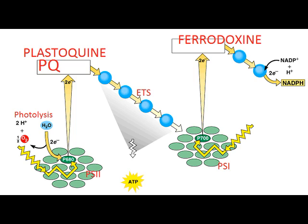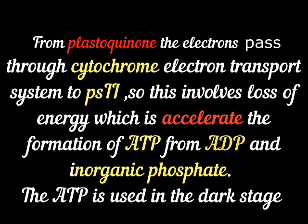The energy being lost by the electrons is used to accelerate the combination of ADP and inorganic phosphate to form ATP. So the ATP is arising from inorganic phosphate and ADP, with the energy released by the electrons acting as the catalyst. Those electrons then replace the electrons that were excited from Photosystem 1. Remember, light is striking both photosystems — Photosystem 1 and Photosystem 2 — at the same time.